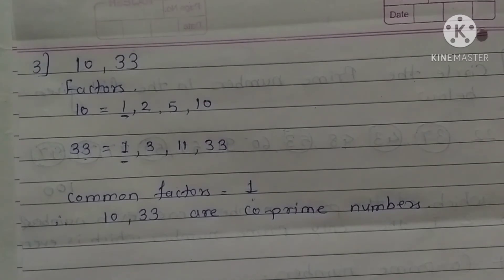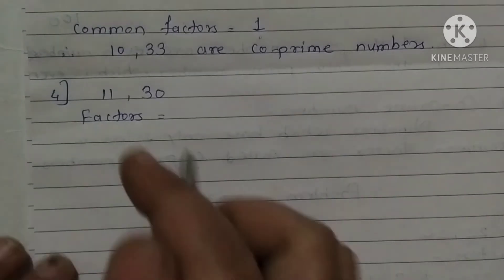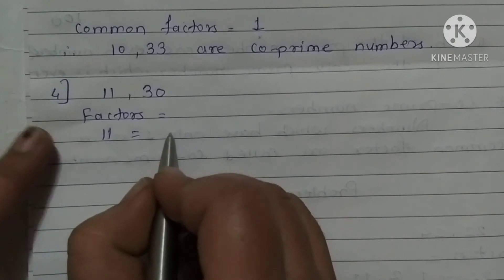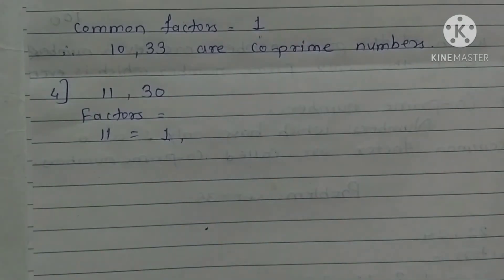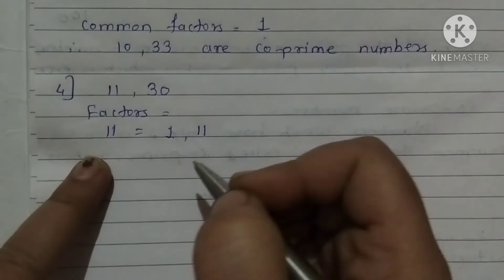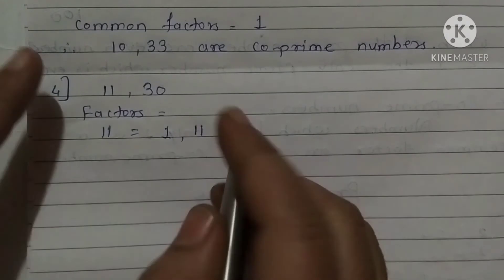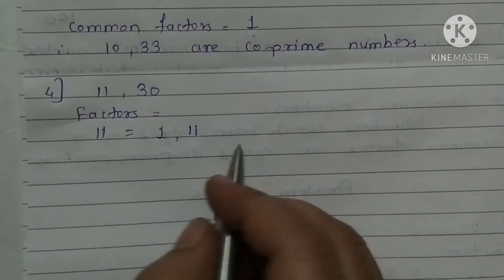Now let's see the fourth example. The next example is 11 and 30. We have to write the factors. First, 11. Start with 1. Is 11 in the 2, 3, 4 table? No. 11 is not in any other table. So the factors are 1 and 11. So 11 is a prime number, as it has only the factors 1 and itself.